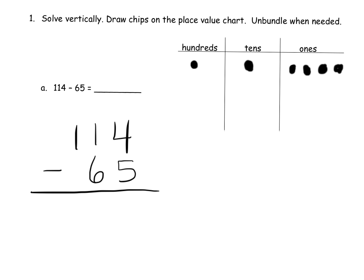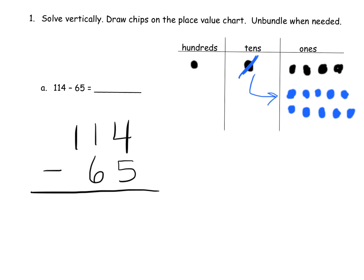It says start with those four ones and take away five ones. Do we have enough to take away five ones? No. So what we're going to do is unbundle this 10 and get 10 ones. So now we have 14 ones.